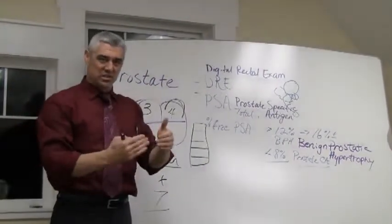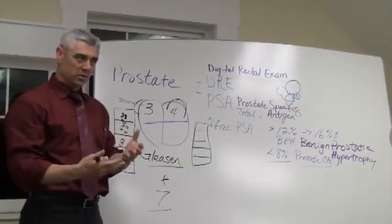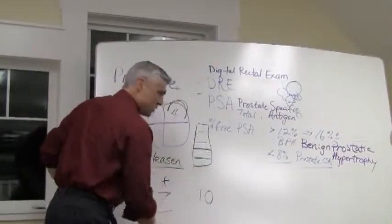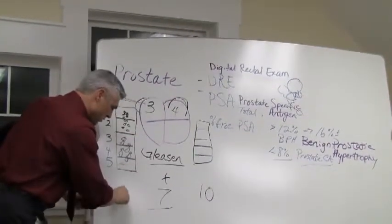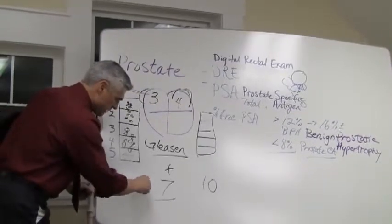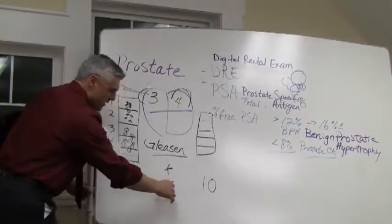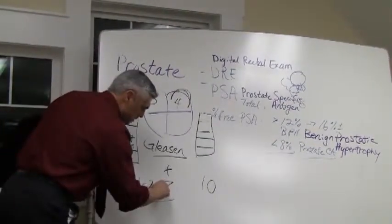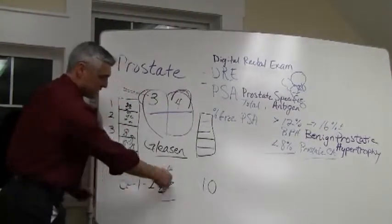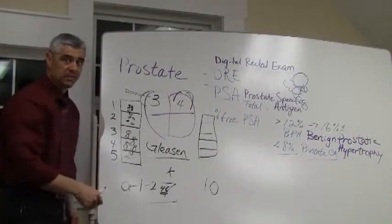Gleason scores that are lower are more treatable, with 10 being the very worst score. Scores of 1, 2, up to 4 to 6 are the most treatable. A score of 7 is kind of the cutoff line for Gleason.